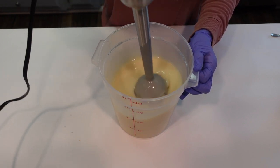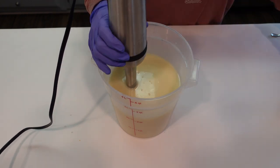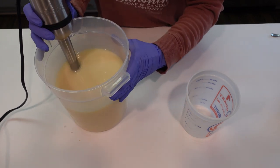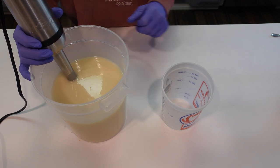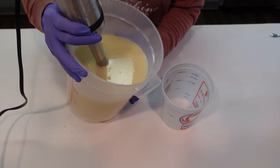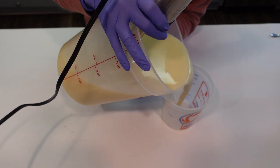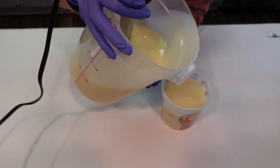So I'm just bringing this to emulsification. All right, and we're about there now, so I'm going to go ahead and divide up my batter. We're just going to do a simple, beautiful, classic in-the-pot swirl for this design, so I'm going to go ahead and pour off my accent color here. I'm just eyeballing it.